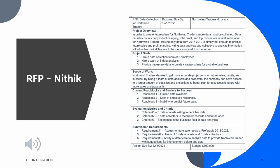Northwind Traders Grocers will take data from different companies and analyze it to collect information, allowing Northwind Traders to be more successful in the future. Our goals are to hire a data collection team of five employees, hire a team of five data analysts, and provide necessary data to create strategic plans for probable businesses. Northwind Traders desires to get more accurate projections for future sales, profits, and success. By hiring a team of data analysts and collectors, the company can have access to a larger amount of statistics and projections to better plan for a successful future.